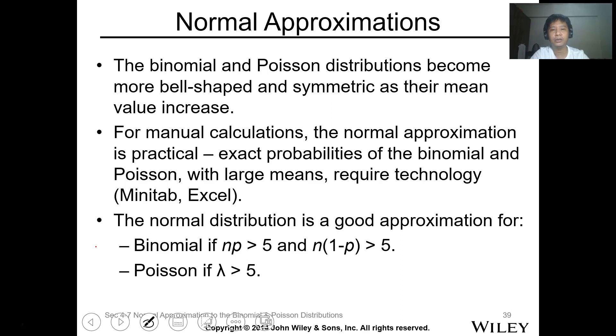Now, normal approximation. Normal approximation usually is used for binomial and Poisson distribution, so that it will become a bell shape and symmetric as their mean value increase. For manual calculation, the normal approximation is practical. Exact probability of the binomial and Poisson with large mean requires Minitab and Excel. But you can use, for binomial, this is the basis. NP is greater than 5 and N times 1 minus P is greater than 5. So if greater than 5, then you can use the normal approximation. For Poisson, the lambda is greater than 5.